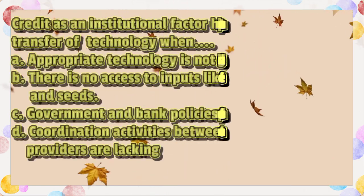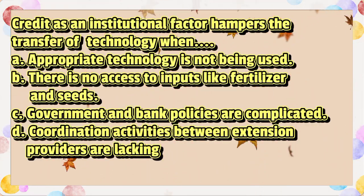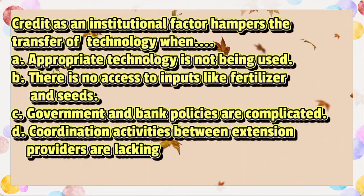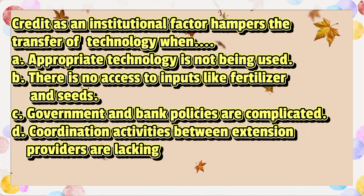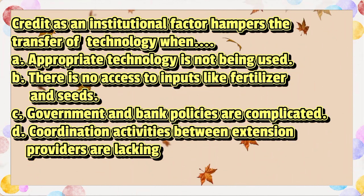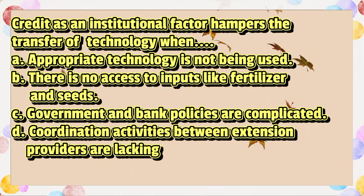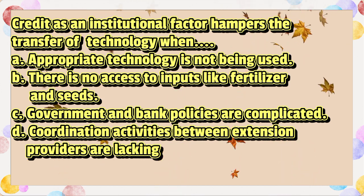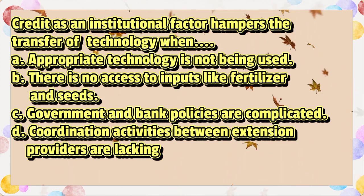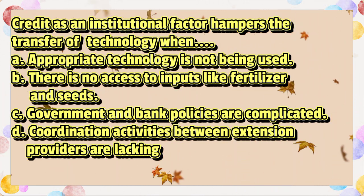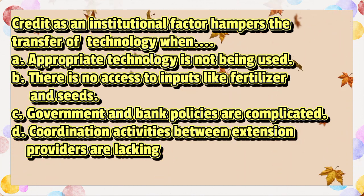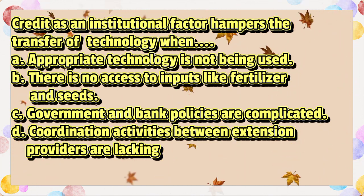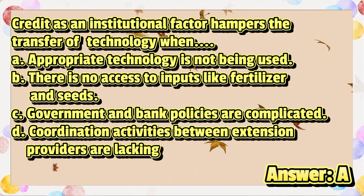Credit, as an institutional factor, hampers the transfer of technology when: A. Appropriate technology is not being used. B. There is no access to inputs like fertilizer and seeds. C. Government and bank policies are complicated. D. Coordination activities between extension providers are lacking. The answer is letter A.